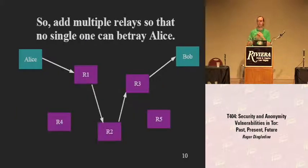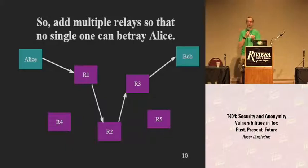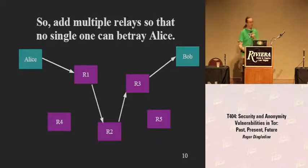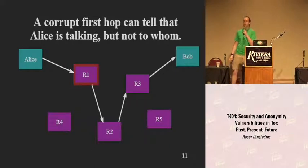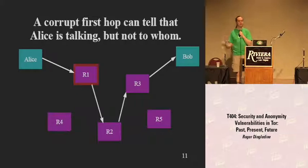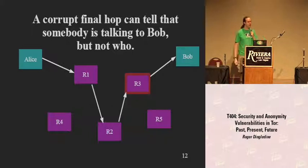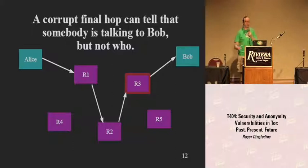What we'd like to do is have distributed trust. The idea of Tor is that you relay your connection through more than one hop. No single hop learns both where you're coming from and where you're going. If R1 is bad, he knows Alice is using Tor but not what for. If R3 is bad, he knows somebody is talking to Bob but not who. If R1 and R3 are colluding, then we're screwed — we'll get into that.